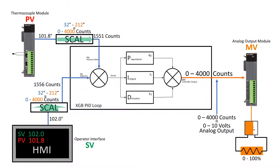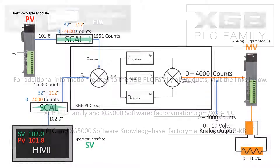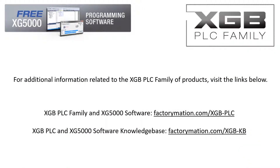Configuring the PID loop in the XG5000 software, auto tuning, basic manual tuning, and ladder programming for controlling the loop is covered in other videos in this series. For additional information related to the XGB PLC family of products, visit the links below.